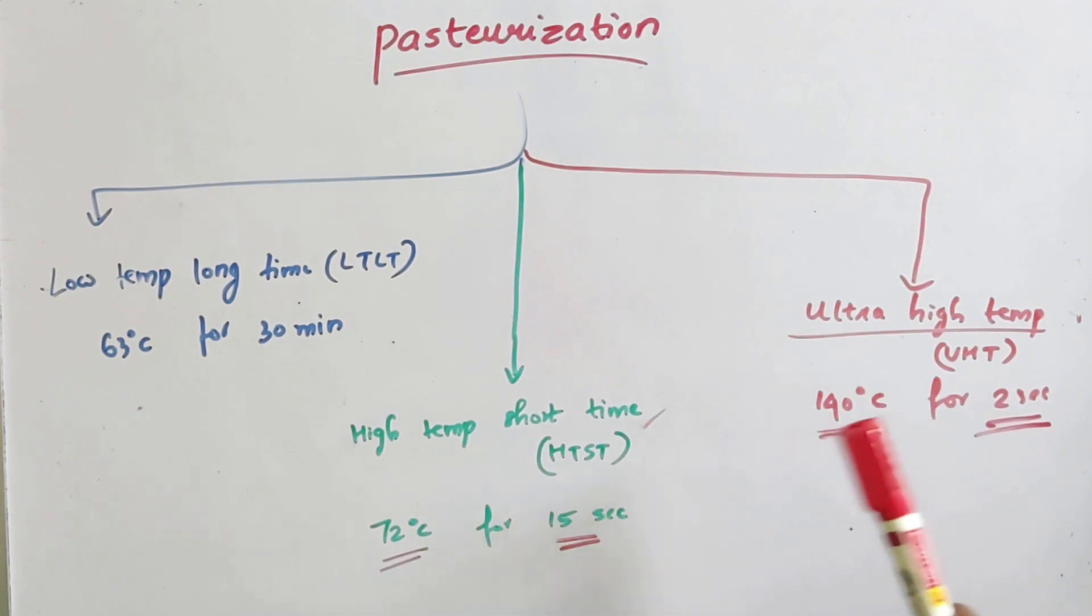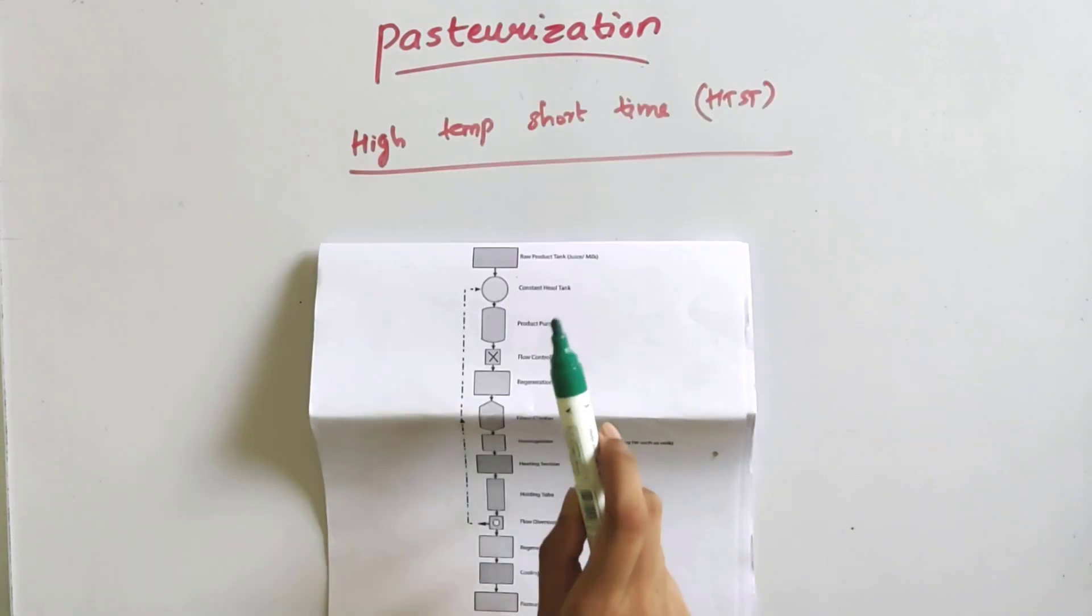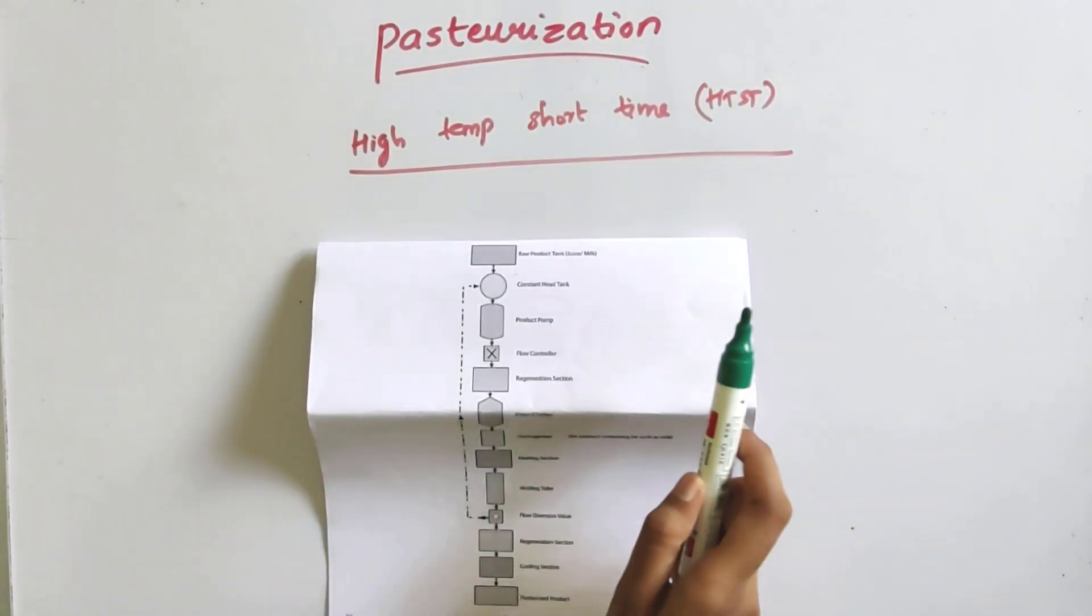Third one is ultra high temperature pasteurization or UHT pasteurization, where an ultra high temperature, 140 degrees Celsius, is applied for a time period of 2 seconds. The UHT processed milk can be stored without refrigeration.